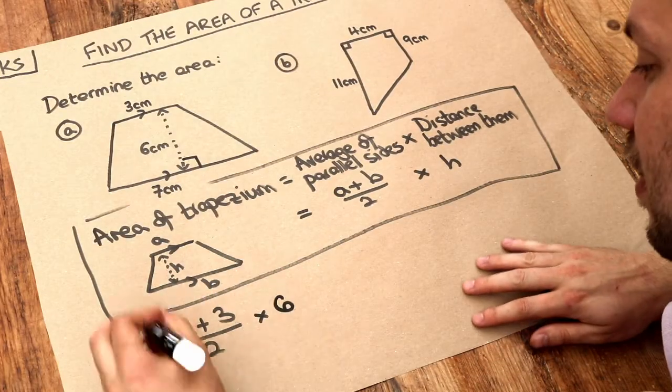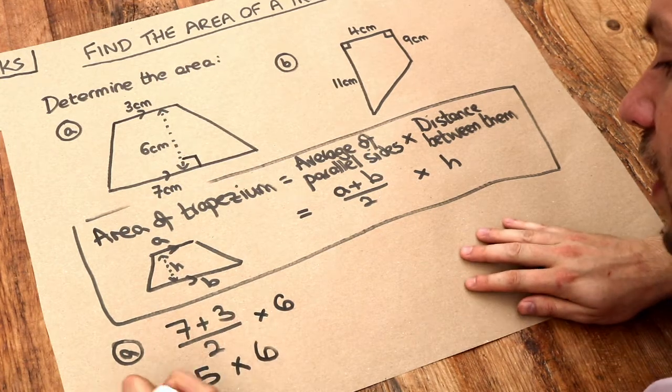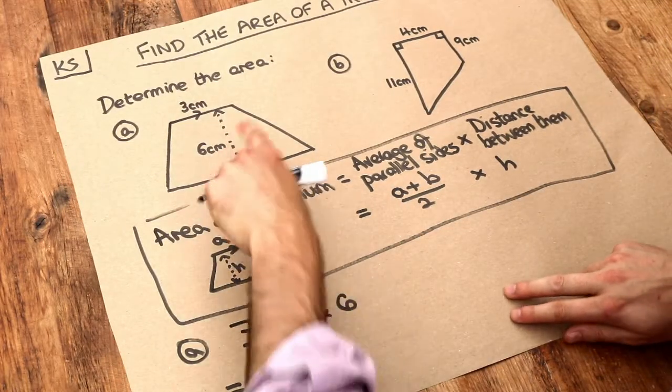So we're timesing by six that's ten divided by two is five times six which is 30 and because this is an area it's going to be in centimeters squared.